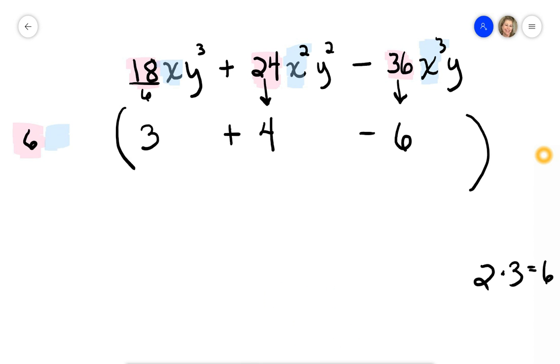The most you can pull out of all three is just an x, because you've got x, you've got x squared, which is x times x, and you've got x cubed, which is x times x times x. The most they have in common is just one x. Now, when I pull that out of the first one, when I divide this by x, it just cancels out.